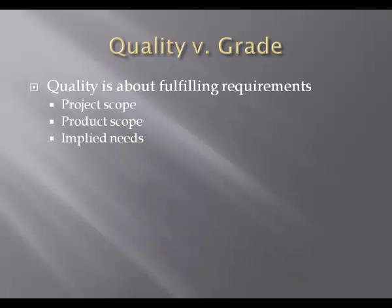One of the first conversations you'll have is what is the difference between quality and grade. Quality is about fulfilling requirements — it's a conformance to requirements and a fitness for use. Quality is about satisfying the project scope and the product scope. It's also satisfying the implied needs — those non-quantifiable elements that the stakeholder expects and are implied with the deliverable, such as expecting it to be functional, safe, and scalable.